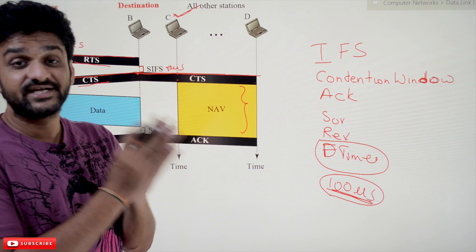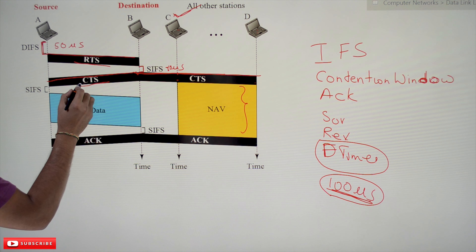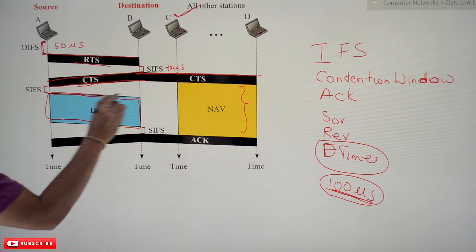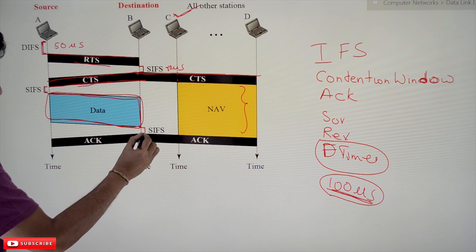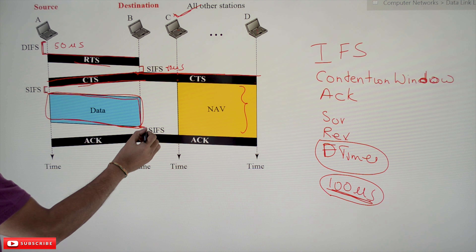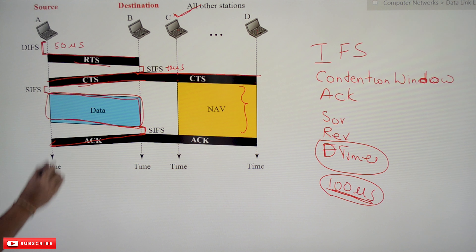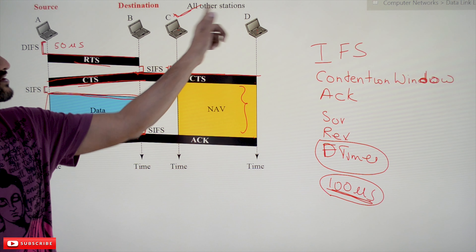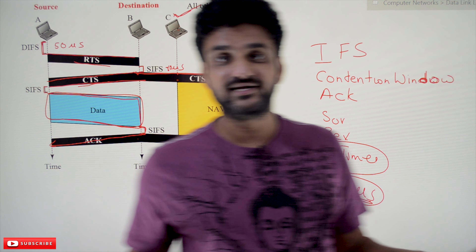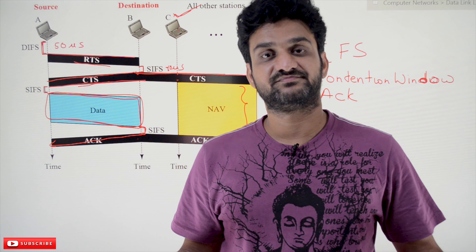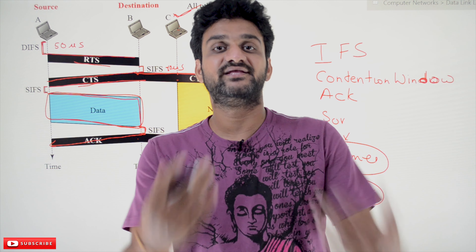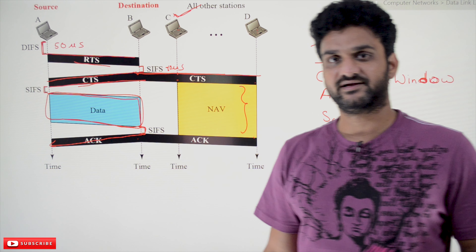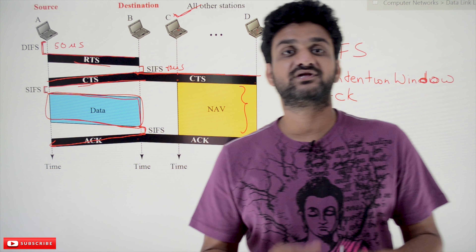After receiving the Clear to Send, the sender waits for SIFS time and then transmits its data. After the data transmission is complete, the receiver waits for SIFS time and sends an acknowledgment back to the sender. When other stations receive this acknowledgment, they understand the transmission is done and they can now start their contention process — sense the channel and transmit their own data if needed. This is how collision avoidance is achieved.